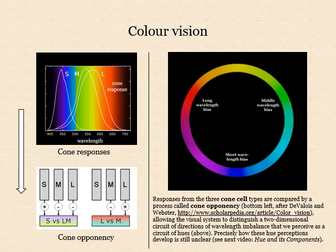These cone types respond to all, all but the longest, and the short wavelengths of light respectively, and their outputs are compared with each other by a process called cone-opponency. This system allows us to distinguish a two-dimensional circuit of directions of imbalance towards long, middle, short, and long and short wavelengths. In contrast, a dichromatic species with just two receptor types can only distinguish two directions of imbalance towards long or short wavelengths. Opponent processing also explains why an even balance of the long, middle, and short wavelengths is perceived as an absence of hue rather than as three simultaneous hue sensations. Our visual system detects variations in the balance of the long, middle, and short wavelength components of light, and we perceive these variations as variations in hue and saturation.